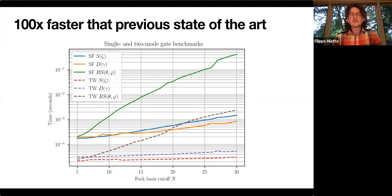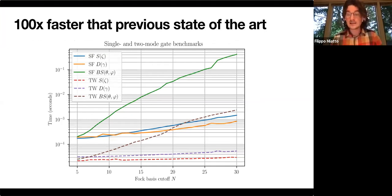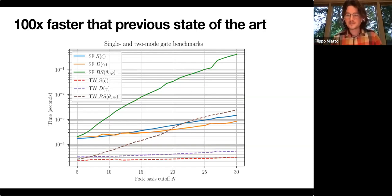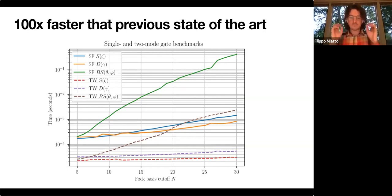Here are some benchmarks. The previous state of the art was Strawberry Fields, likely the only package that could give matrix elements of arbitrary transformations. Comparing it with our implementation in the Walrus library — shown on a log scale — the speedup at larger matrix sizes is more than 100×. We stopped there because the green line (Strawberry Fields) was taking too long. Because our method is so fast, we can push the cutoff into the hundreds, enabling multiple layers with many gates per layer — tens or hundreds of elements — while still running quite fast.